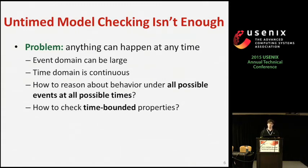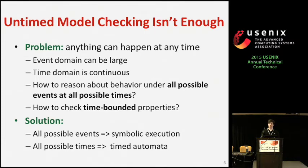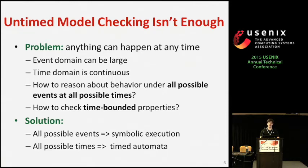We'd also like to test properties of our system that are based on time — invariants like a light should never be on at 3 a.m., or it should always turn off five minutes after motion. Our solution is two-fold: we handle the domain of possible events and environmental inputs using symbolic execution, and we correctly reason about time by leveraging a theory from real-time systems verification called timed automata. The idea of combining symbolic execution and model checking isn't new, so I'll mainly focus on the second part.